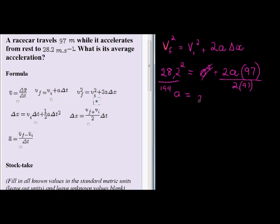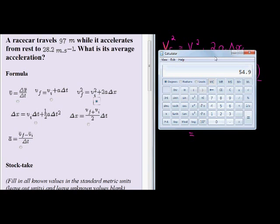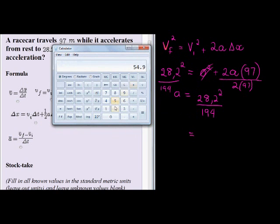So I have that a is equal to 28.2 squared divided by 194. That means my final answer is 28.2 squared divided by 194 equals 4...